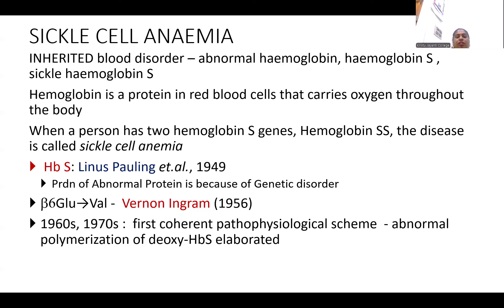Today we are going to discuss sickle cell anemia. Sickle cell anemia is a blood disorder which can be inherited from parents to offspring. This blood disorder is because of abnormal hemoglobin, or sickle hemoglobin. Hemoglobin is a protein in RBCs that carries oxygen throughout the body.